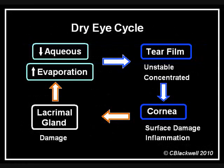Technically, names like dysfunctional tear syndrome are used instead of dry eye because they are more inclusive, but we will stick with dry eye for simplicity. We will explore the world of dry eye in two parts: first, the direct causes — decreased tear production or increased evaporation — and second, if the dry eye is bad enough to cause damage to the cornea, that results in inflammation, which creates a further cycle of problems.